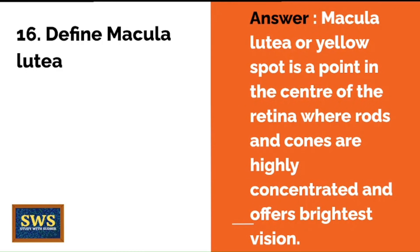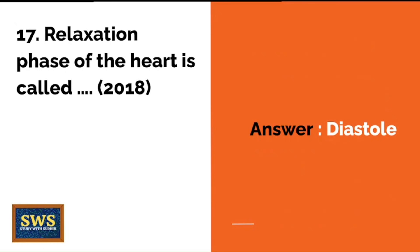Question 15: Define macula lutea. Macula lutea, or yellow spot, is a point in the center of the retina where rods and cones are highly concentrated and they offer the brightest vision — 'brightest vision' is a key phrase. Question 16: The relaxation phase of the heart is called diastole. This is from the 2018 paper. If you can give the answer without looking at MCQ options, your preparation is better.